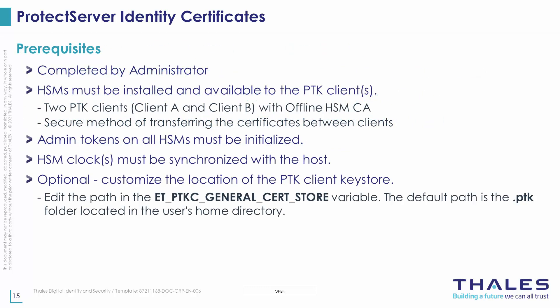Before beginning, make sure that all Protect Server 3 HSMs are installed and available to the PTK client. If you will be authenticating HSMs with an offline Certificate Authority, two PTK clients will be operated: Client A and Client B. The HSM Certificate Authority must be installed and available to Client A, while the remaining HSMs that will be authenticated must be installed and available to Client B. The admin tokens on all HSMs must be initialized and all HSM clocks must be synchronized. If you would like to customize the location of the PTK client keystore, make sure you do so before proceeding.